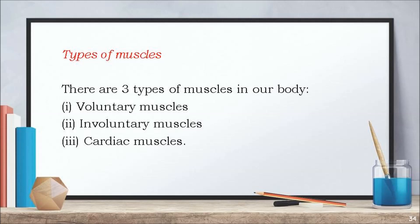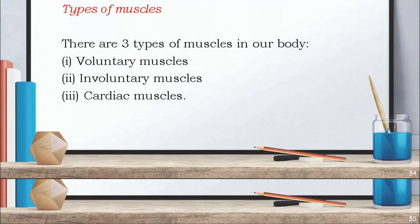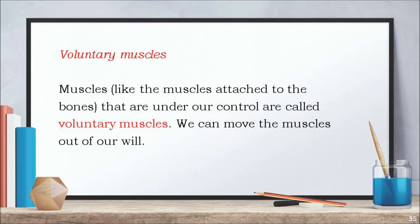There are three types of muscles in our body: voluntary muscles, involuntary muscles and cardiac muscles. Muscles that are under our control are called voluntary muscles. We can move these muscles out of our own will. For example, the muscles that are attached to the bones are voluntary muscles.